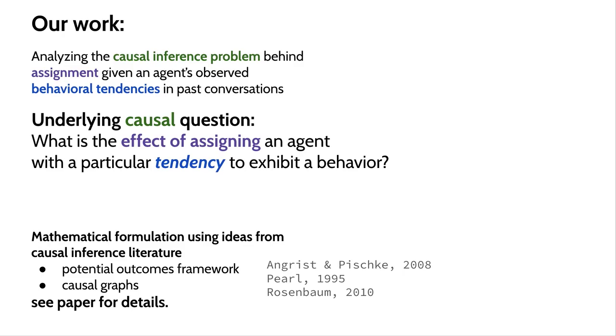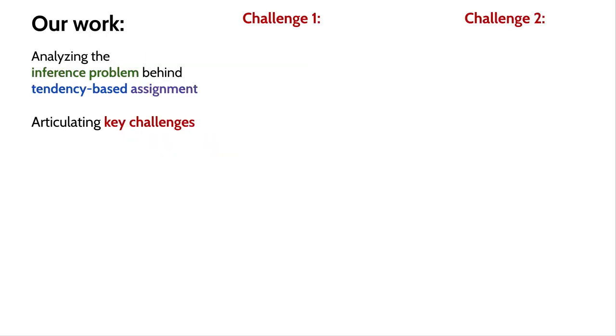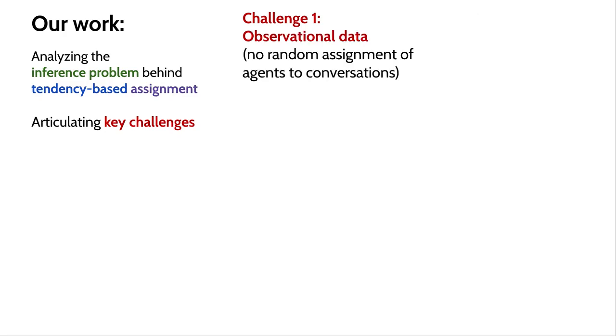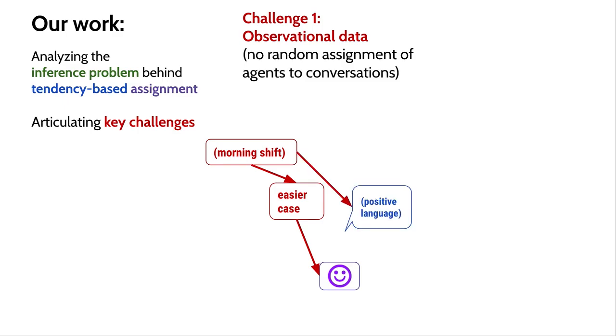Now I've already given examples of problems we face when we try to estimate this effect. And we distill these examples into two key challenges that we must address. First, since we can't run a randomized experiment, agents aren't randomly assigned to conversations. And that's problematic because agents who systematically select, for instance, morning shifts, could also systematically experience easier cases and also happen to use more positive language. So that behavior and outcome might be spuriously correlated without being causally related. Now that's a problem whenever we deal with observational data and causal inference.